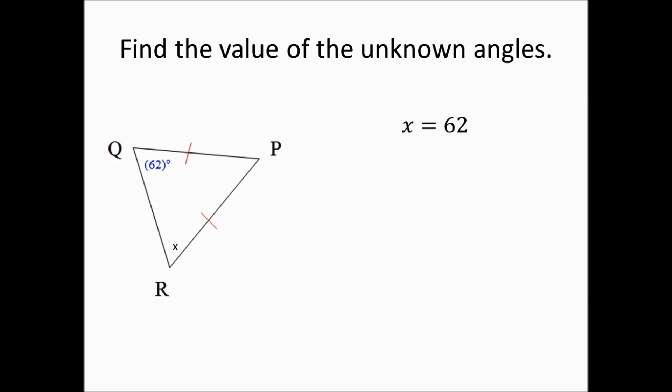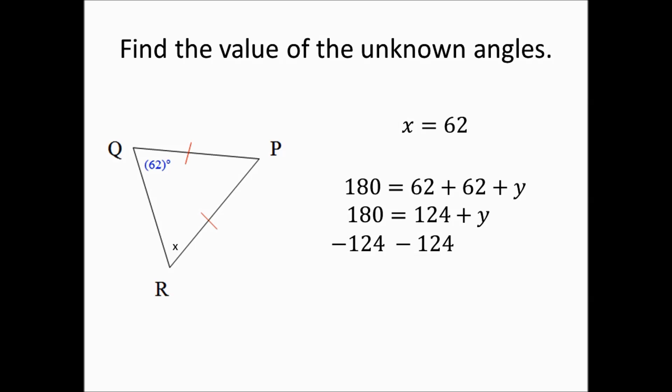To find the value of angle P, we know all angle measurements in a triangle add up to 180. Therefore, 180 equals 62 plus 62 plus Y, where Y represents angle P. So 180 equals 124 plus Y. Subtracting 124 from both sides: 180 minus 124 gives us 56. So the measurement of angle P equals 56 degrees.